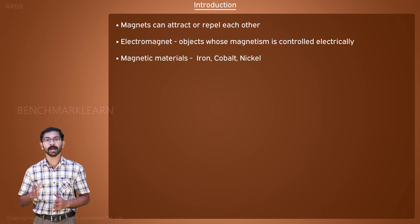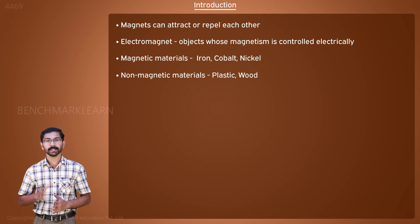Iron, cobalt, and nickel are strongly magnetic materials. Most materials we find in our daily life like plastic or wood are not affected by magnets. These materials are called non-magnetic materials.